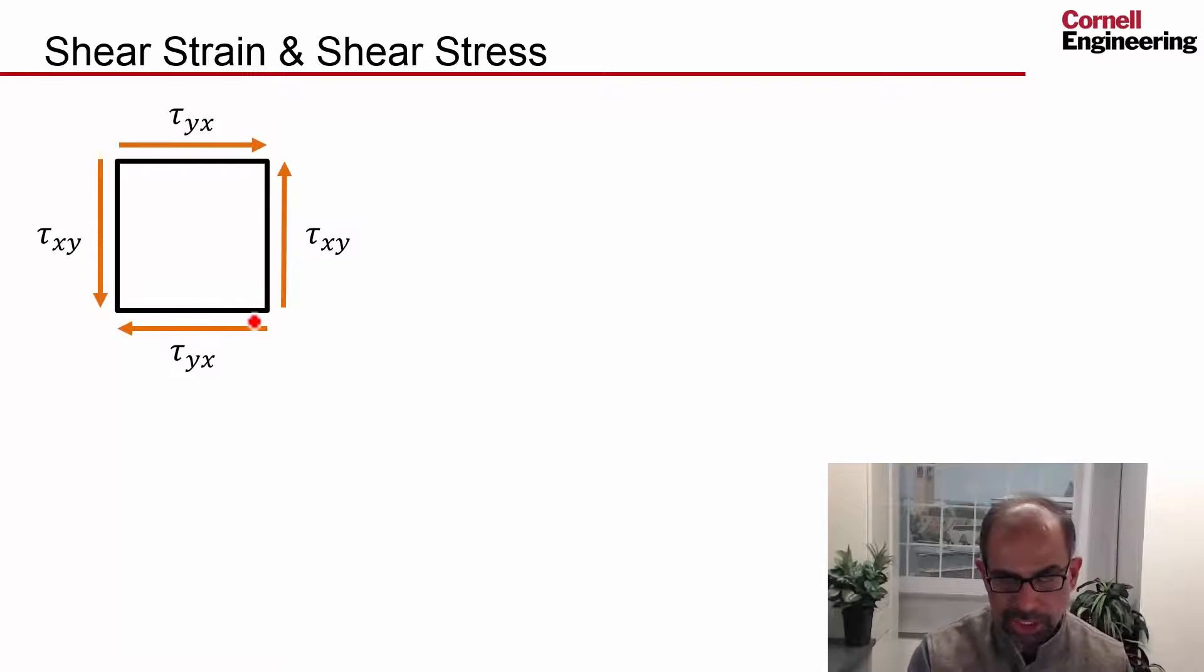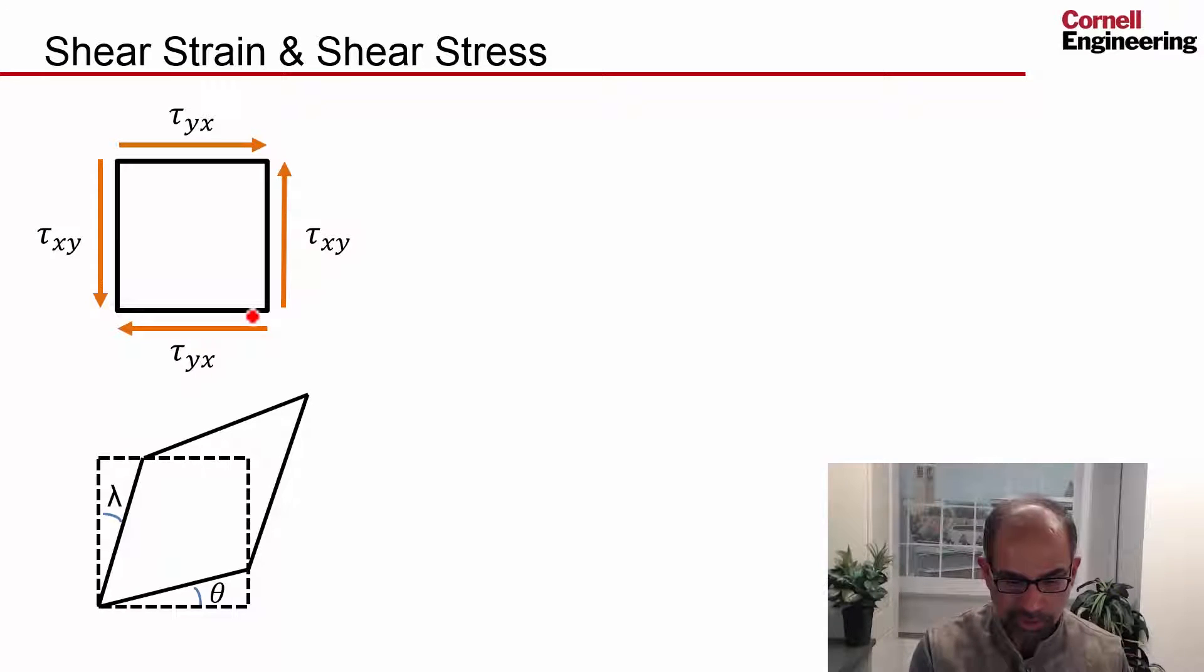And this shear is going to cause the material, the element to skew, and you're going to get something like this. So due to this shear, this corner is going to move here, and I'm neglecting the effect of the normal stresses here, which means that this angle is changed by some amount lambda.